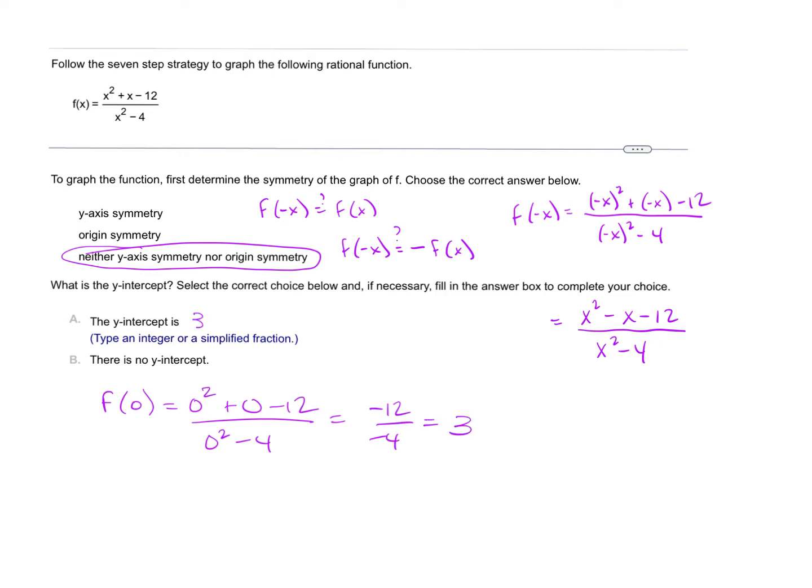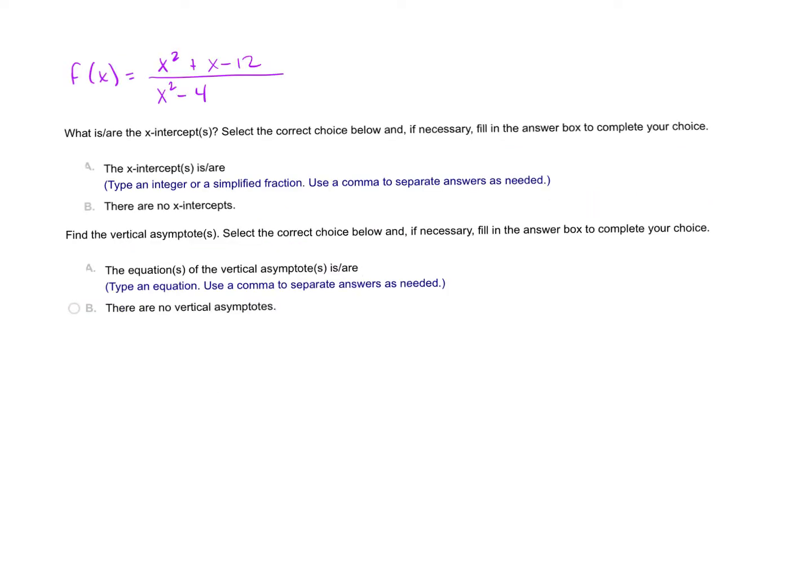To find x-intercepts: x-intercepts happen when a graph touches the x-axis. Any point on the x-axis has the coordinates x, some x that we don't know, comma 0. The y coordinate of any point on the x-axis is 0.